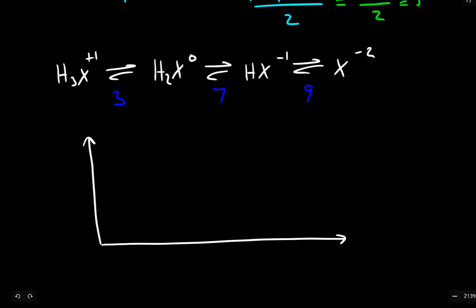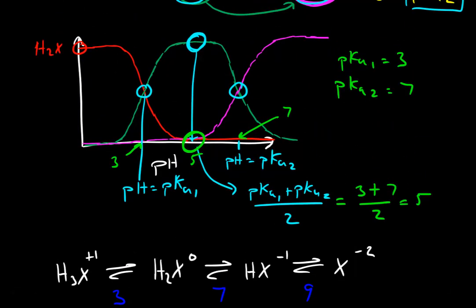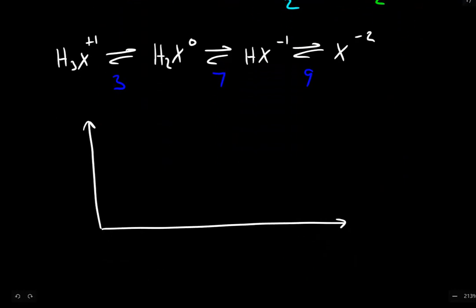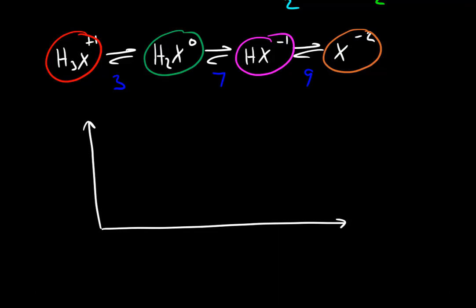And just for consistency, I'll go ahead and try to stick with similar colors as we used up here. So the fully acidic will be red and then green and then purple. So red, then green, then purple. And we'll finish off with our fourth chemical species in orange. So under the most acidic pHs, we have our fully protonated form, but its concentration will drop off. And as it drops off, the concentration of H2X begins to increase.